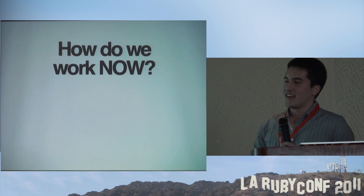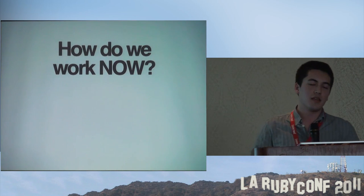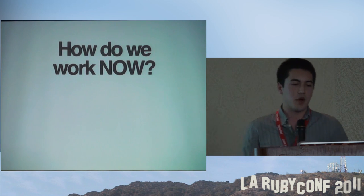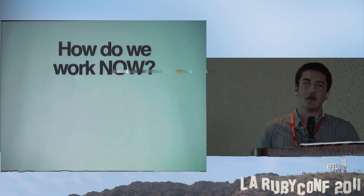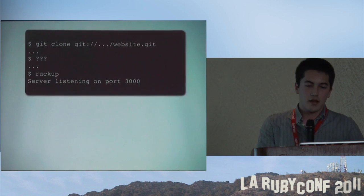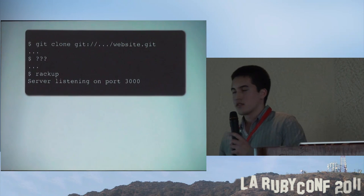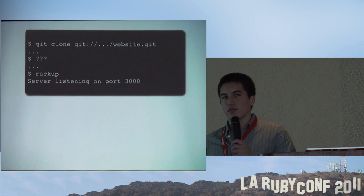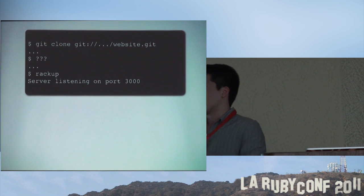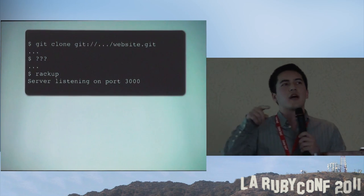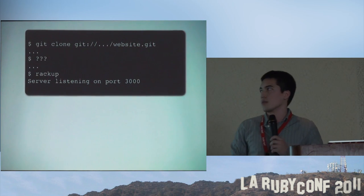So let's take a look at how we work now. I'm going to focus on web development, but you should know there's a lot of people using virtual machines for a lot of other problems as well. This should look familiar to most of you - it's a three step process. The first step is checking out your source code, the second is a mystery, and the third is usually the server is up and running, where you can go online and interact completely with the website.